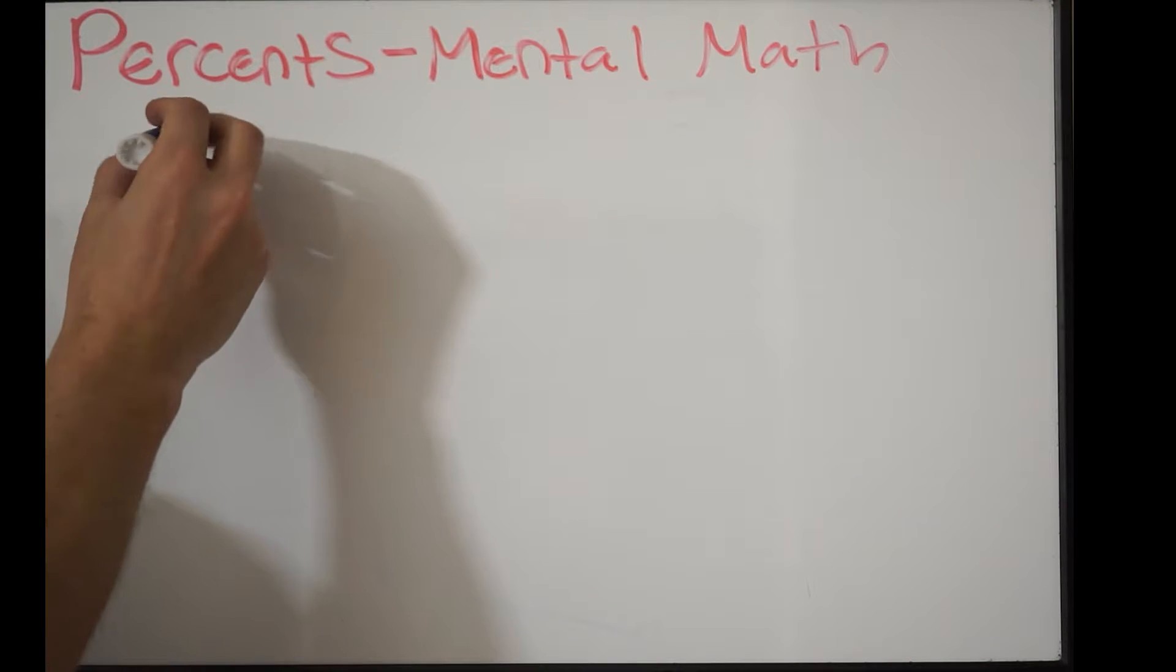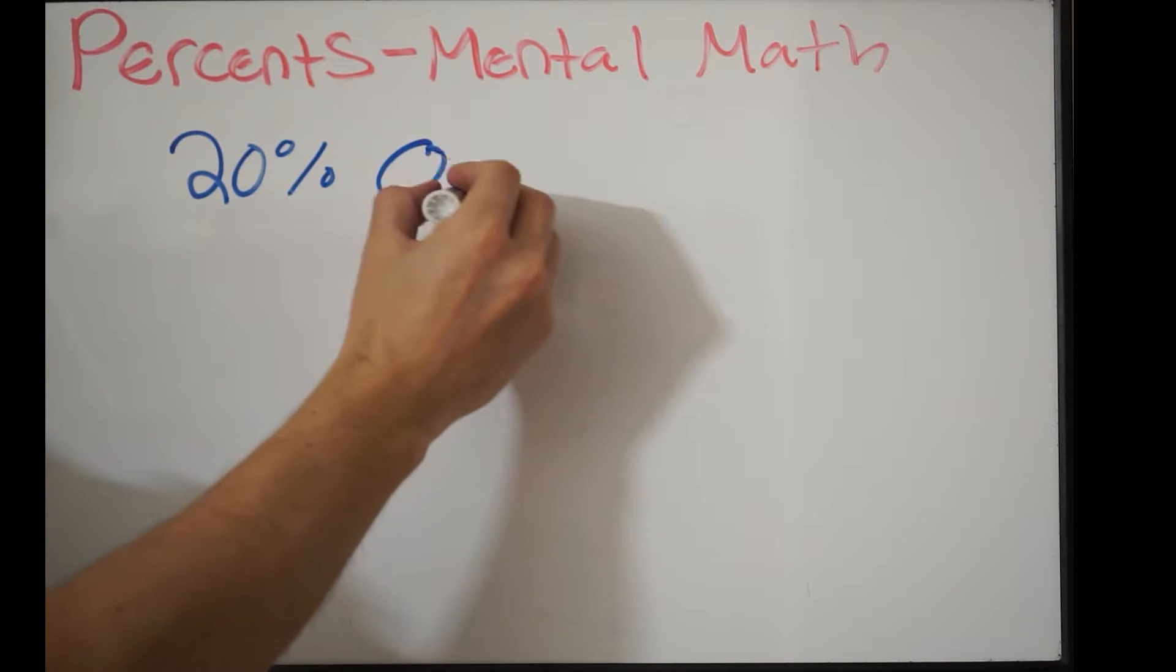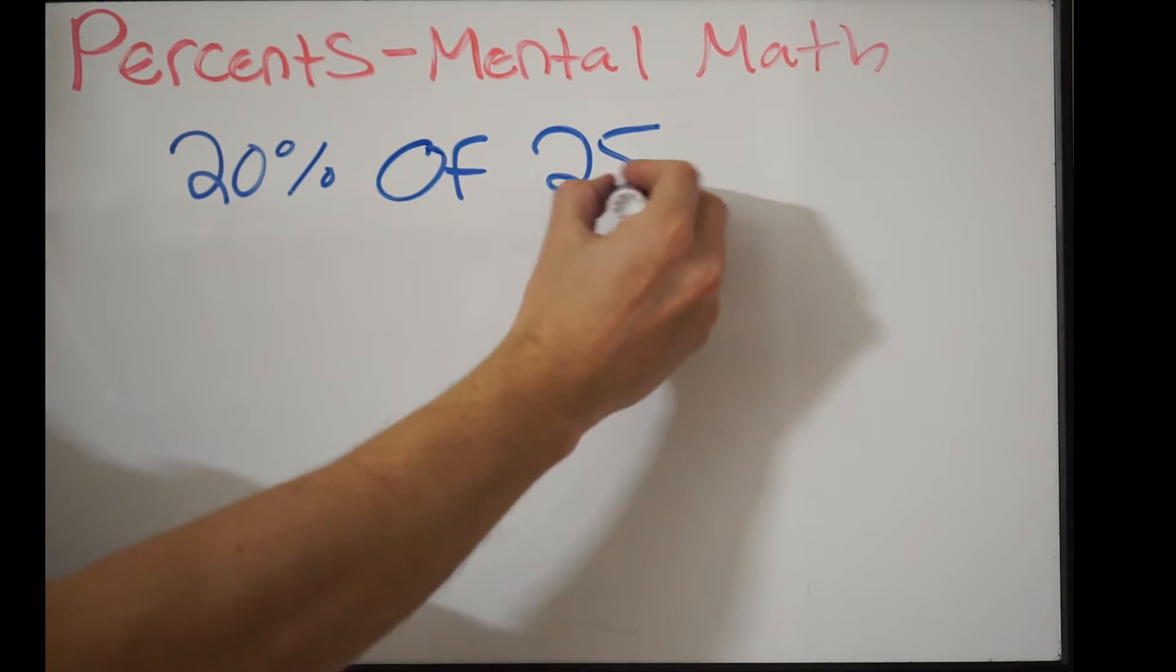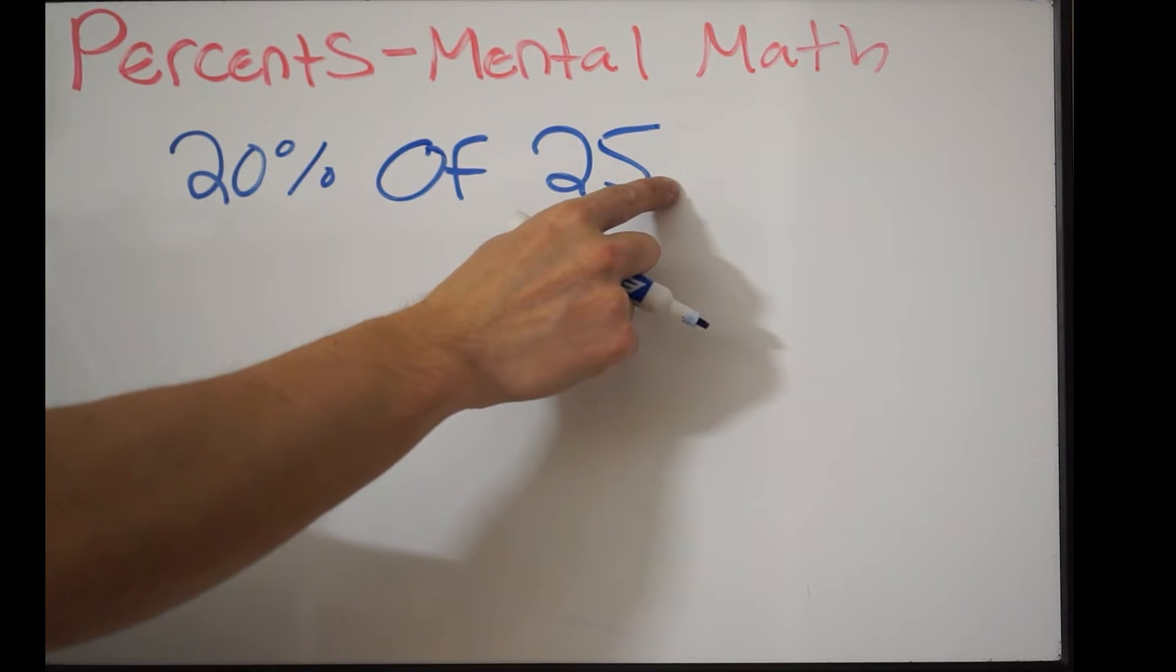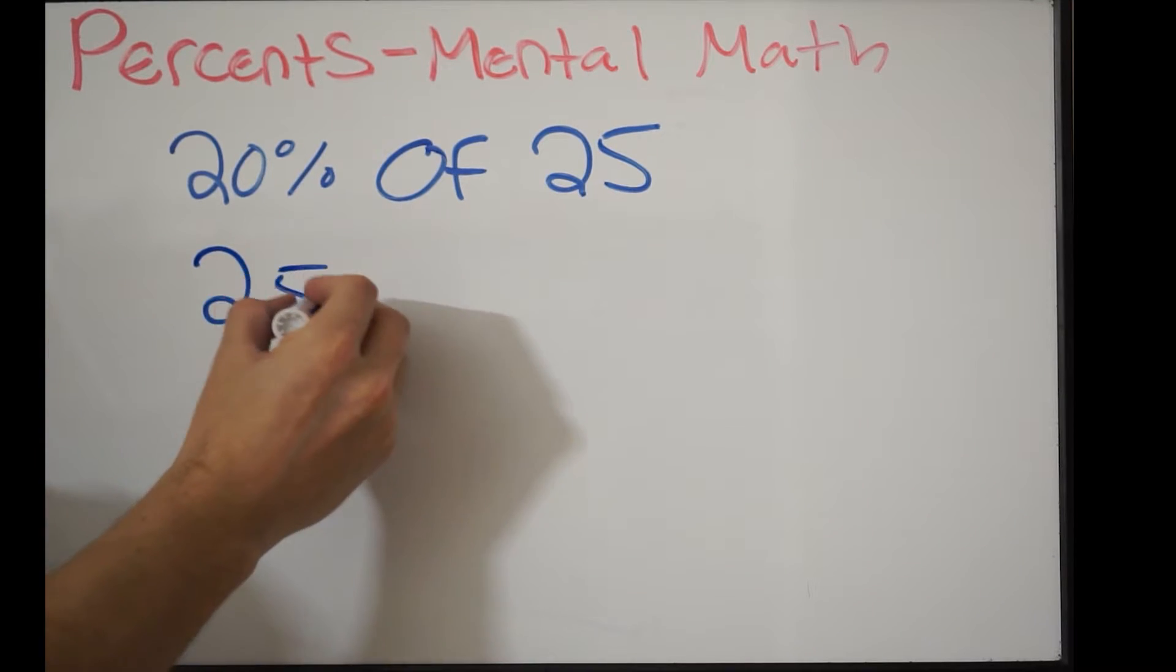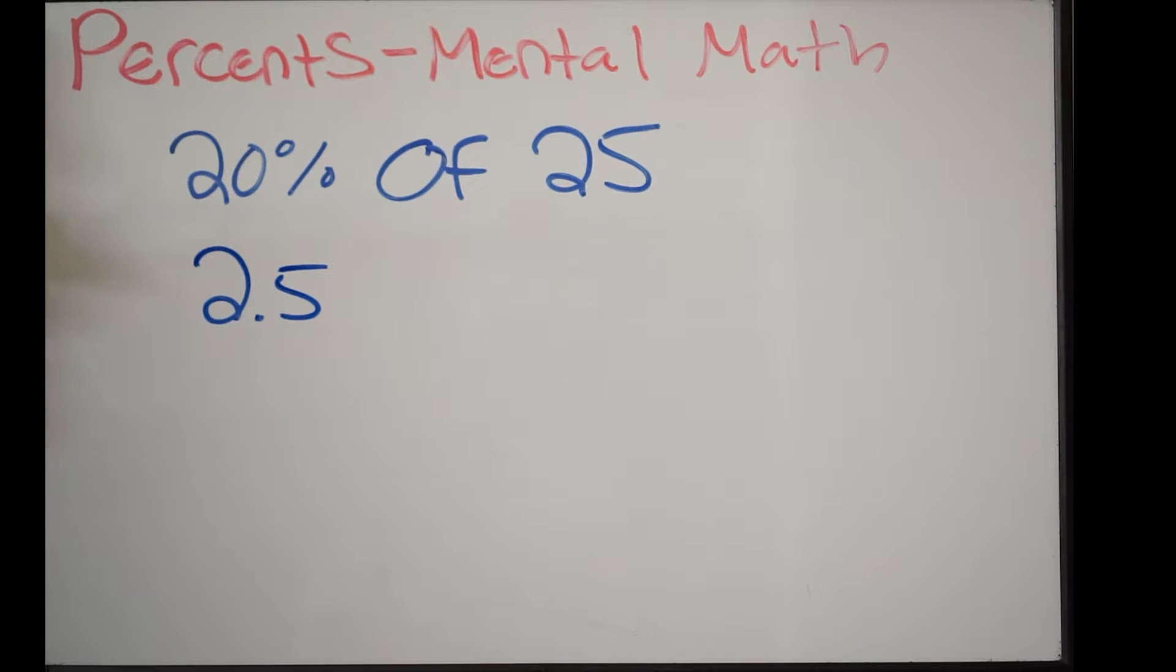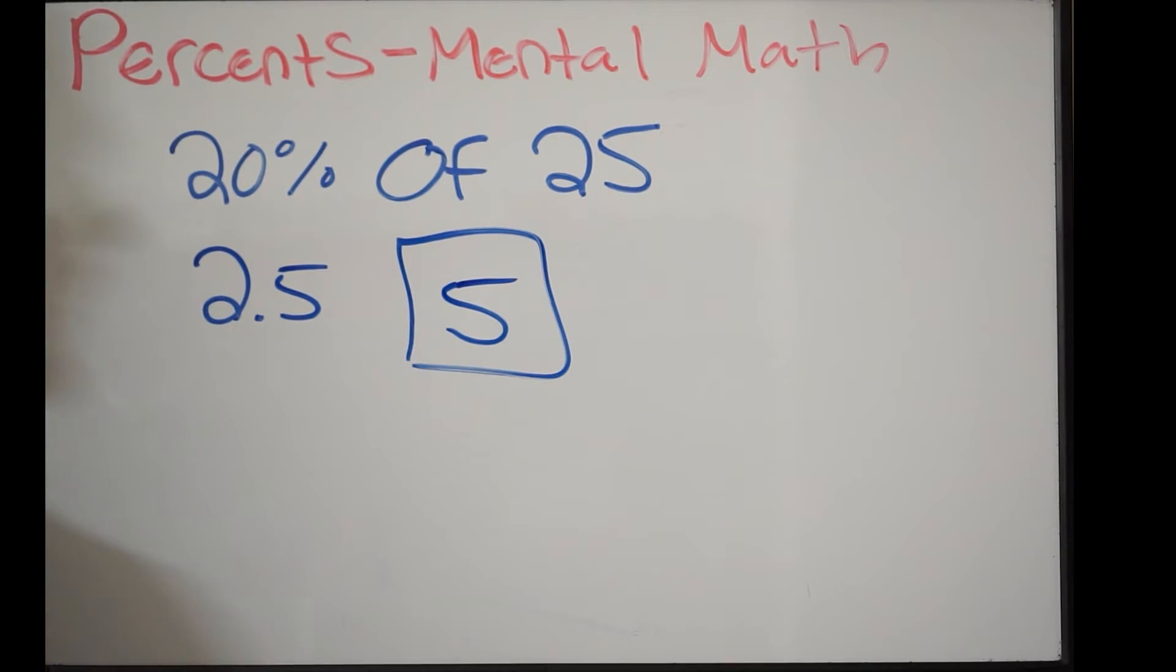We're going to say 20% of 25. Your first step, find 10% of 25. Here's my decimal point. I'm going to move it one place to the left. That gives me 2.5. So that's 10%. To find 20%, simply just multiply this number by 2. That's going to give you 5. So we can do this in our head using mental math. 20% of 25 is 5.